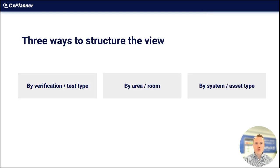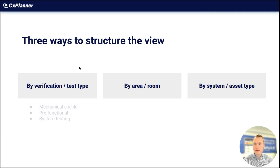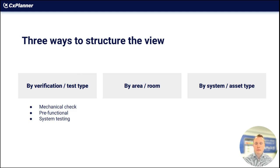When you're going to structure this test overview, there are three main ways to do it. The first one is by verification or test type. In this view, you can divide your assets into main groups — mechanical check, then the assets, pre-functional check, then the assets, and so on.